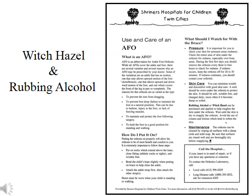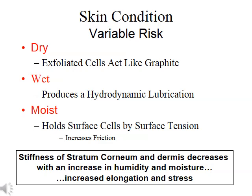Skin hygiene is also recommended in the patient handout. Several cleaning agents are suggested. Rubbing alcohol or witch hazel is used to not only clean the skin, but to also act as an astringent to dry the skin. Dry skin has a higher tolerance for accepting mechanical forces. Skin is an active organ of the body and has variable levels of risk due to mechanical forces. Dry skin is the least susceptible to mechanical injuries, primarily because the cells that we naturally exfoliate act like a dry graphite lubricant on the surface of skin.